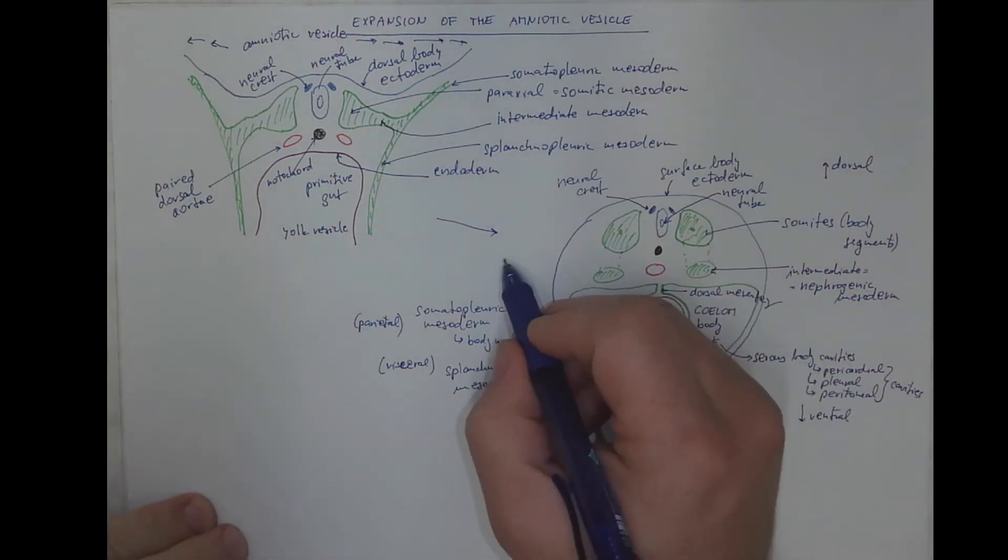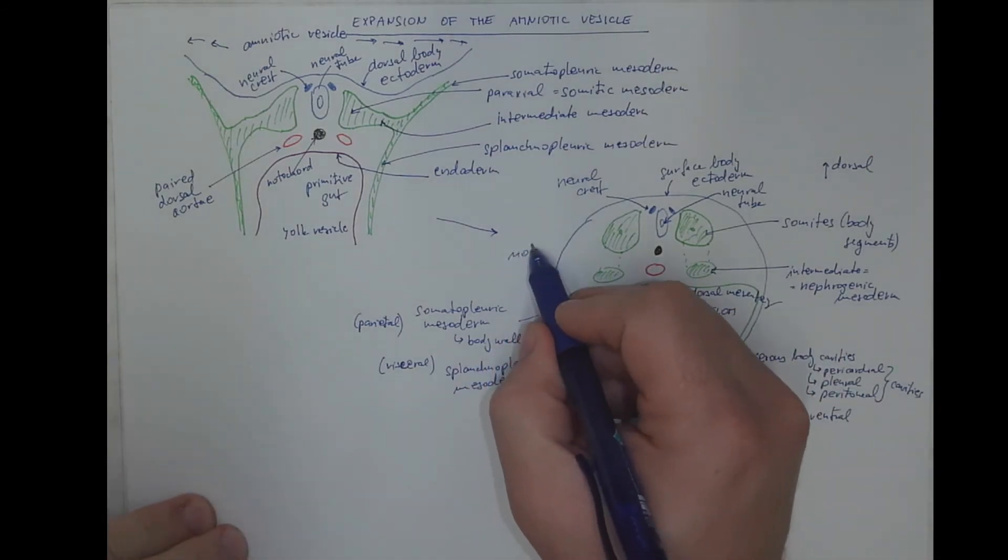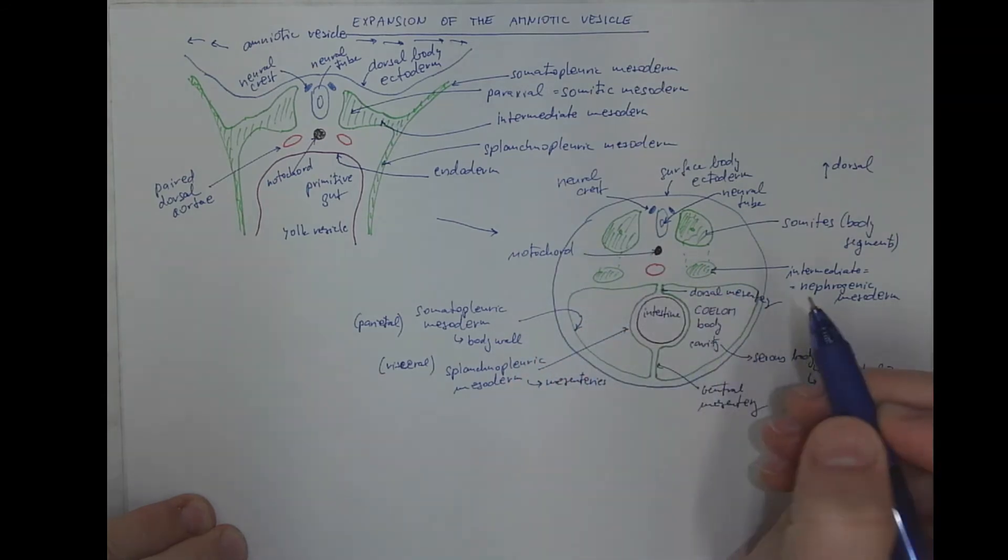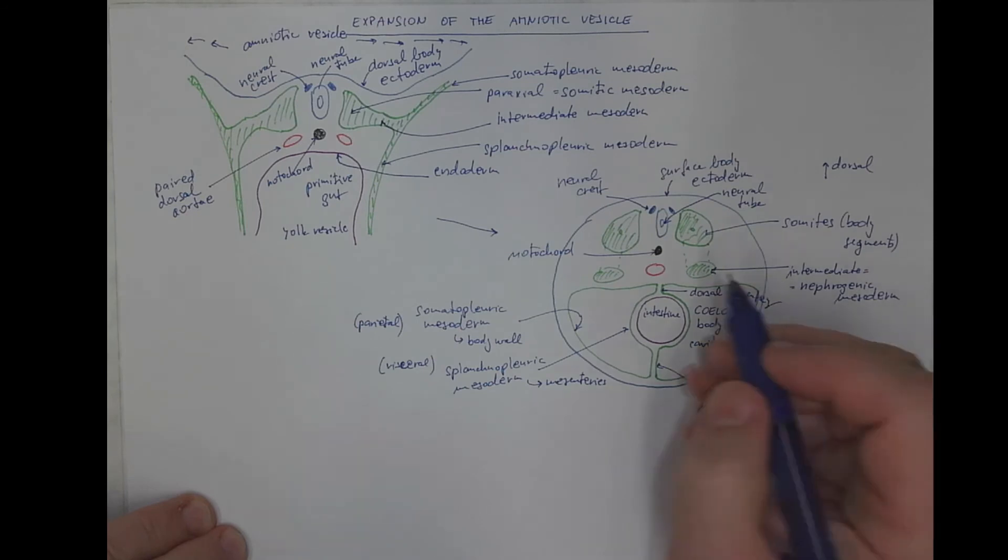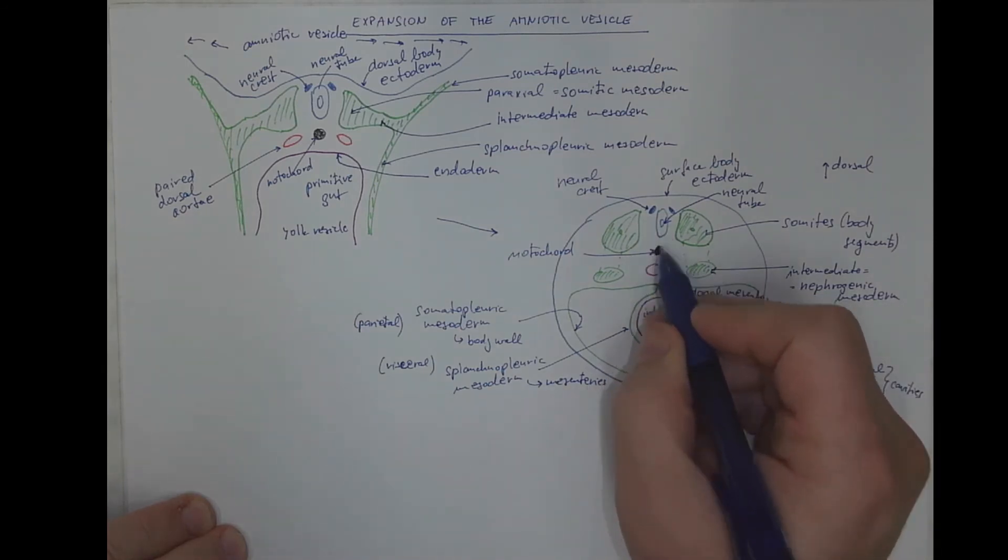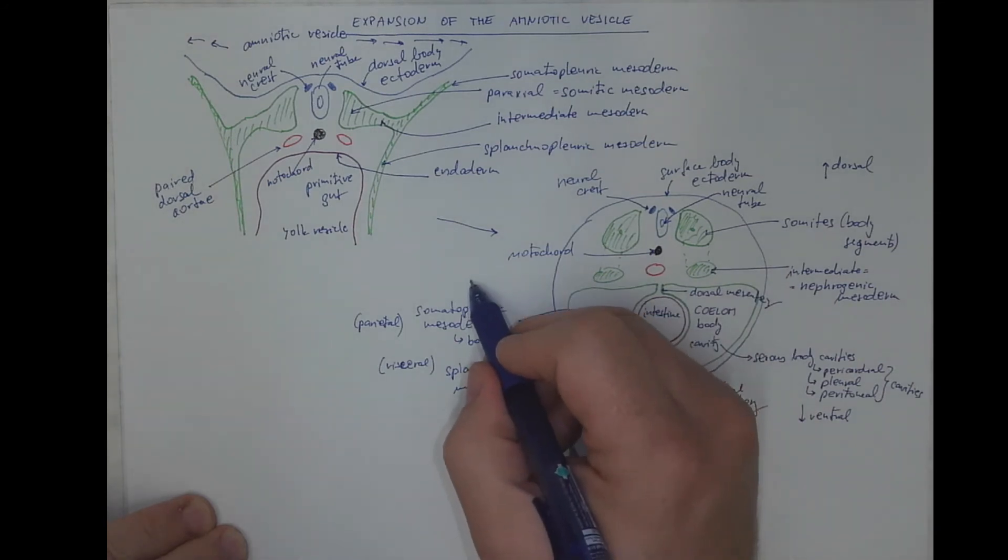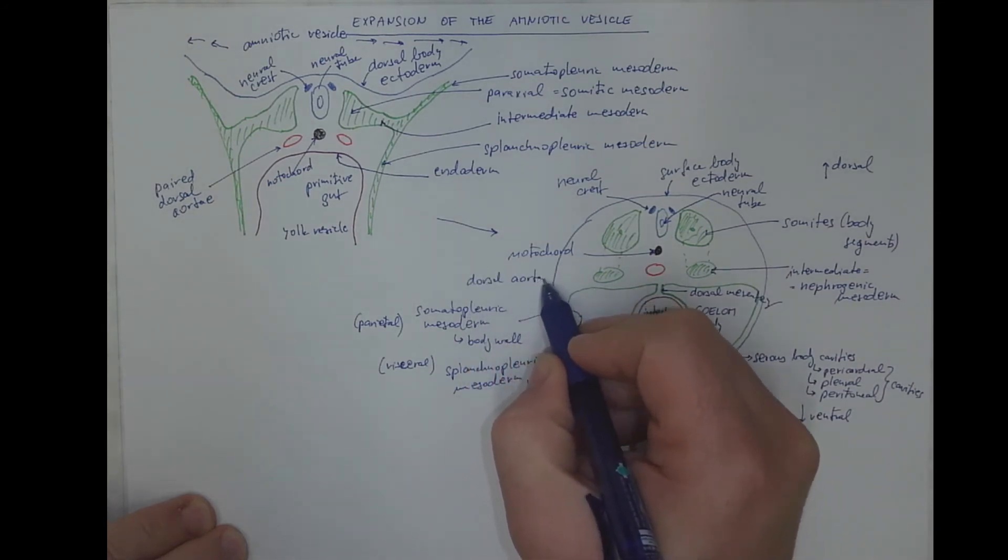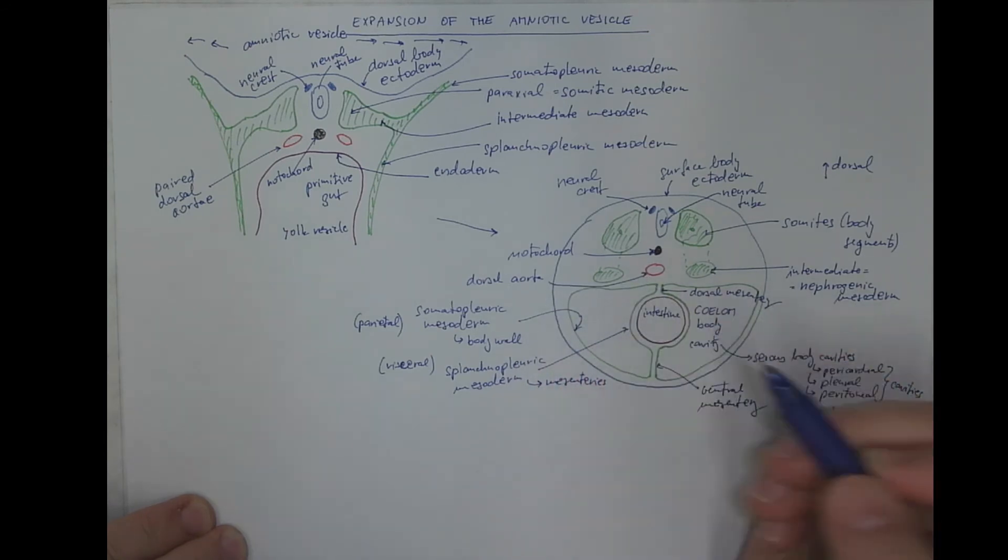I should not forget labeling the notochord, which is a temporary structure but an important organizer and inducer of development of other structures. And the dorsal aorta, unified dorsal aorta.